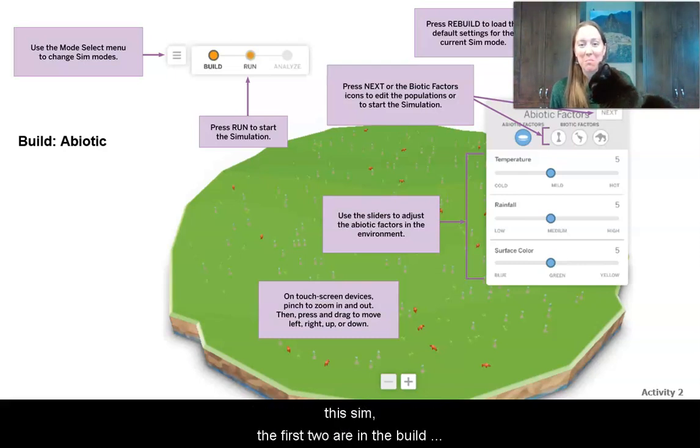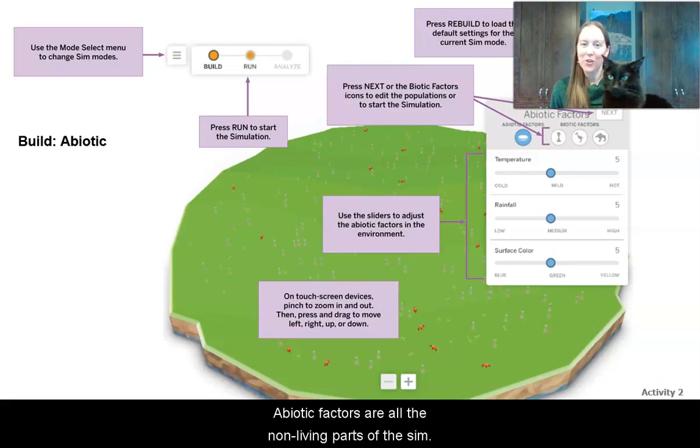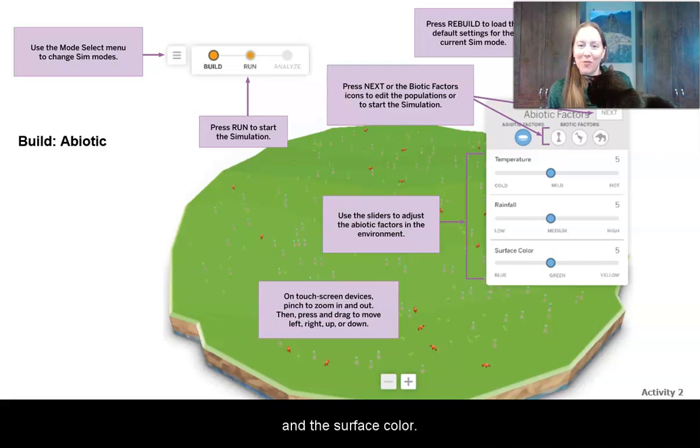The first two are in the build mode. There are two different things that you can build. You can build abiotic and biotic. So abiotic factors are all the non-living parts of the sim: the temperature, the rainfall, and the surface color.